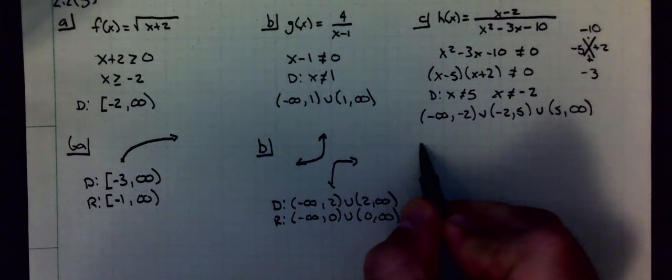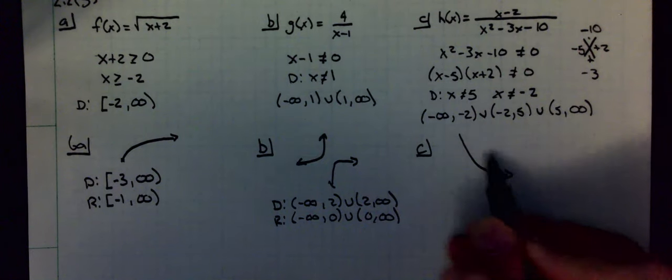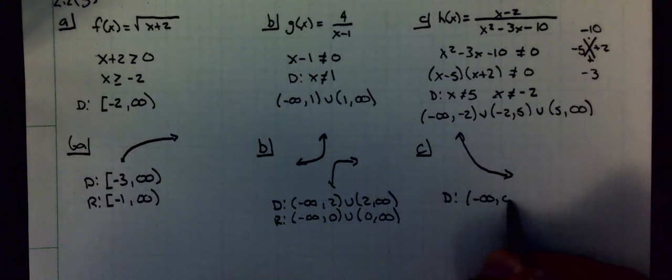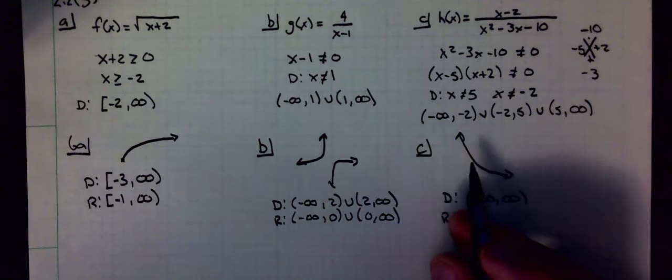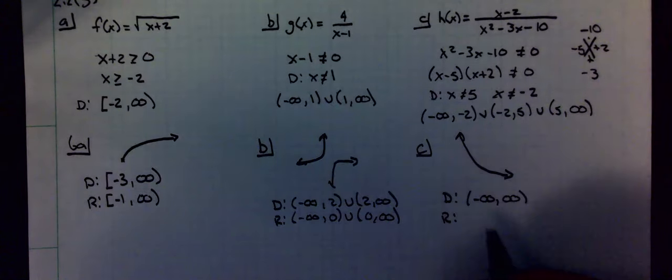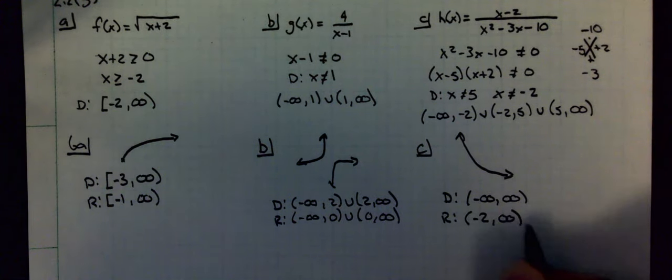C is an exponential decreasing. We said the domain of our exponential functions is all real numbers, so that's from negative infinity to infinity. The range is, in this case, it's starting at the top, going down. The horizontal asymptote is at negative 2. So negative 2 to infinity would be the range.